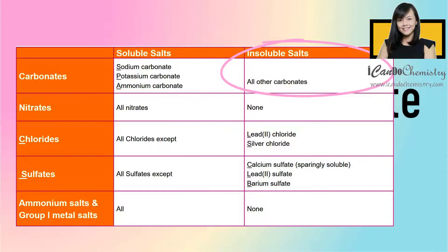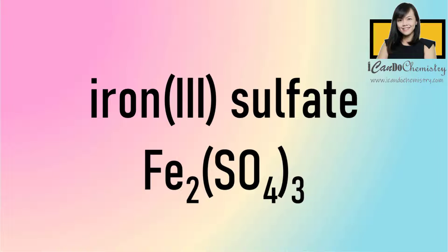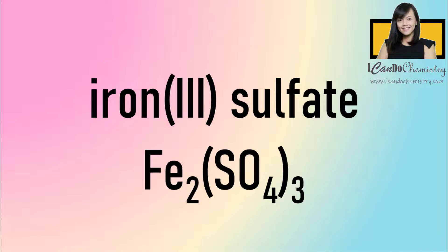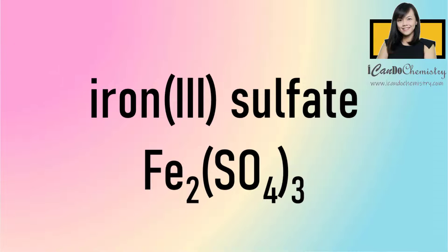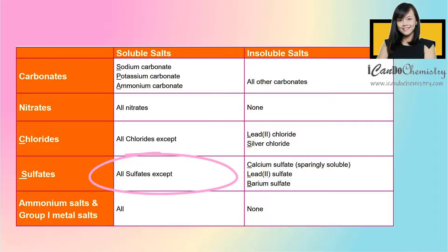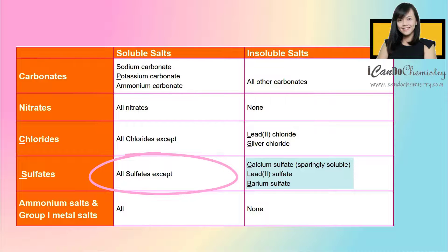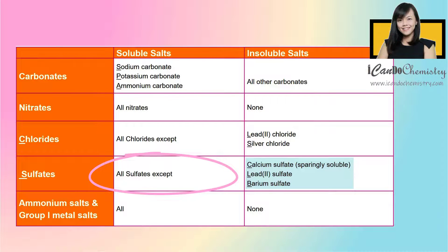8. Iron 3 sulfate. Iron 3 sulfate is soluble. All sulfate salts are soluble except calcium sulfate, lead 2 sulfate, and barium sulfate. So iron 3 sulfate is soluble.